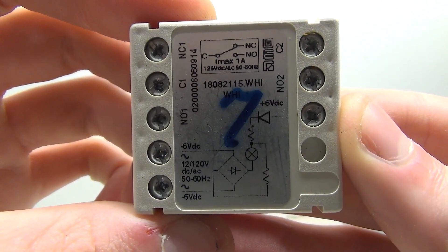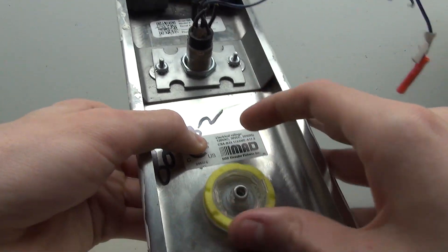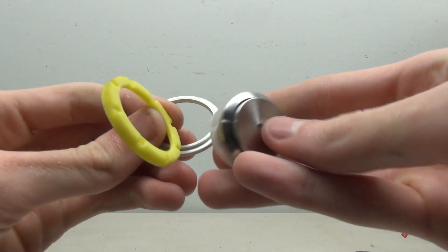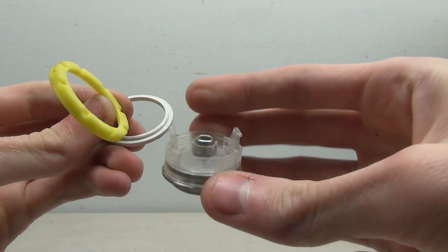Taking off the actual button itself is easy as well. There's a ring on the back and then you can just poke out the button. This design makes switching out buttons a very easy task.